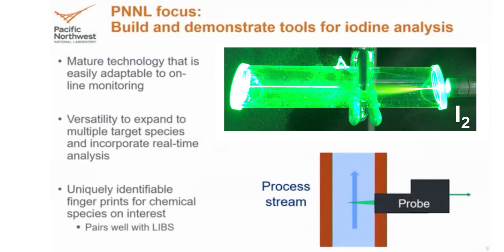What we really like about Raman spectroscopy is that it's a very mature technology — it's been around for a long time, which means pretty much all the equipment we need is commercial off the shelf. It's easy to get, easy to maintain, easy to replace. It's also extremely flexible. We knew our proof of principle goal was iodine, but we want to go beyond that and look at things like HF and T2, and Raman can give us that information as well.